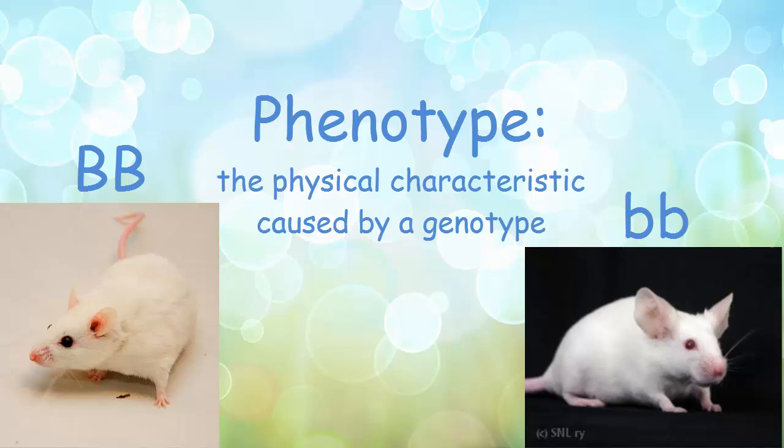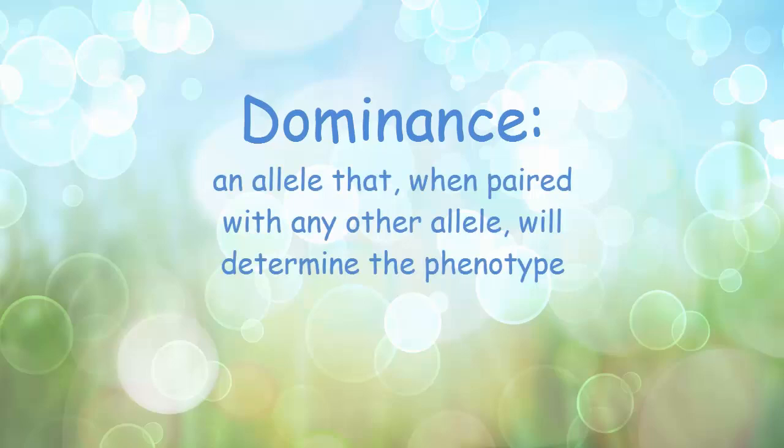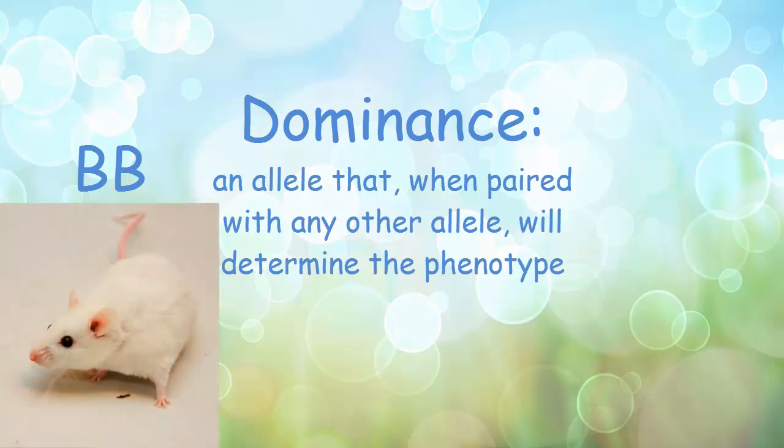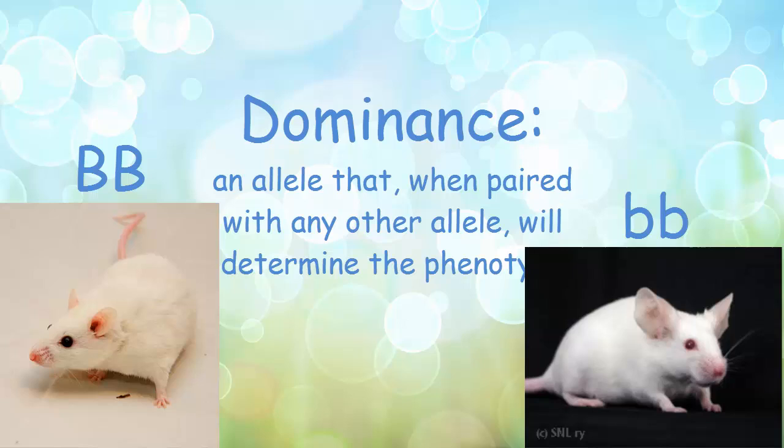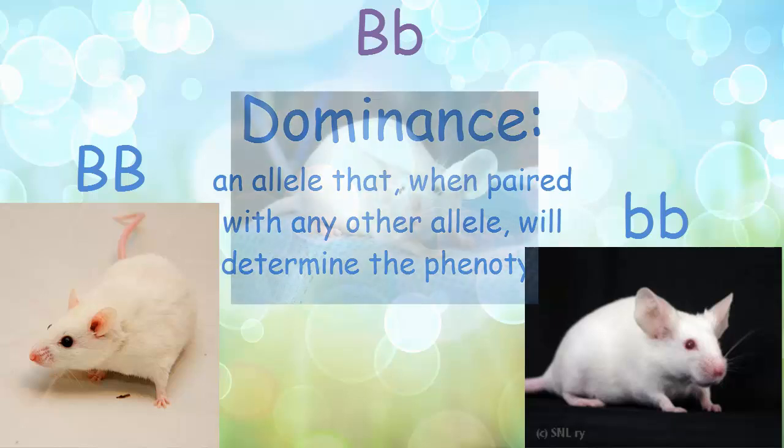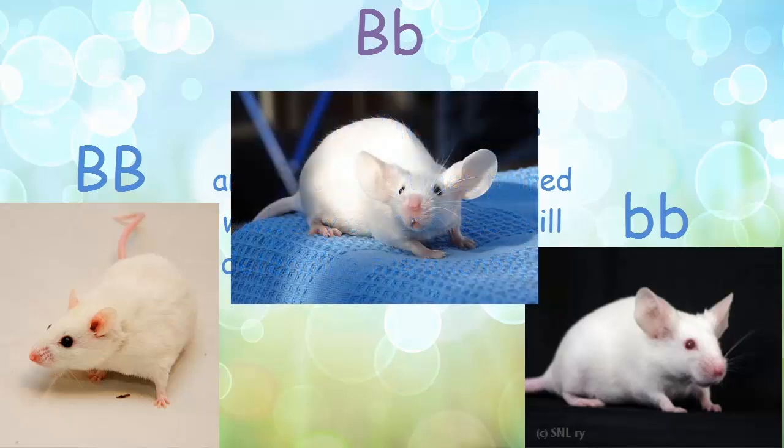It is possible to have one big B and one little b alleles. And what happens when that comes along? Well, that's the matter of dominance. Dominance is an allele that, when paired with any other, will determine the phenotype. Let's go with our mice again. So we know that the genotype big B, big B is the phenotype of black eyes. Little b, little b gives us a phenotype of red eyes. But what happens when we have a big B and a little b? Well, the big B is dominant, the black eyes is dominant here, so we'll end up with a black eyed offspring.